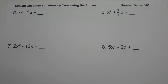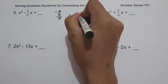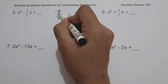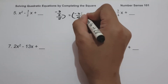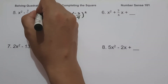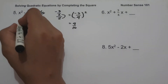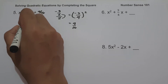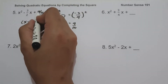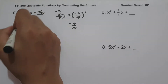On example number 5, we have x squared minus 3 over 2x plus blank. As you can see, the coefficient of the middle term is a fraction. So let us have negative 3 over 2, divide by 2, giving negative 3 over 4 — multiply the denominator by 2, that is 4. Squaring: negative 3 squared is 9, 4 squared is 16. So 9 over 16 must be added. To factor, the square root of x squared is x, the sign is negative, the square root of 9 over 16 is 3 over 4, and then square. And this will be our answer.